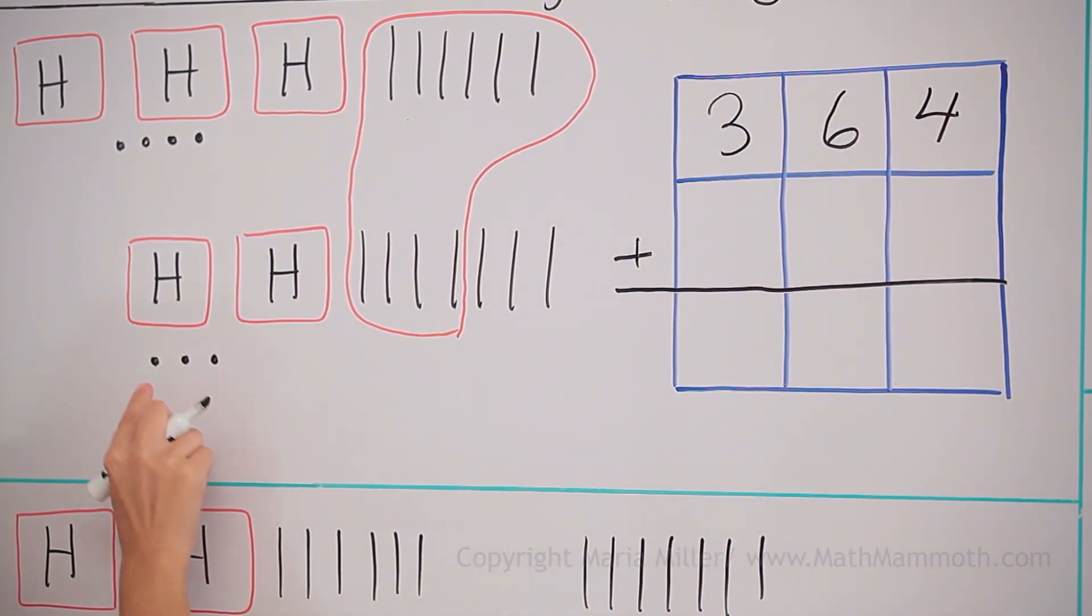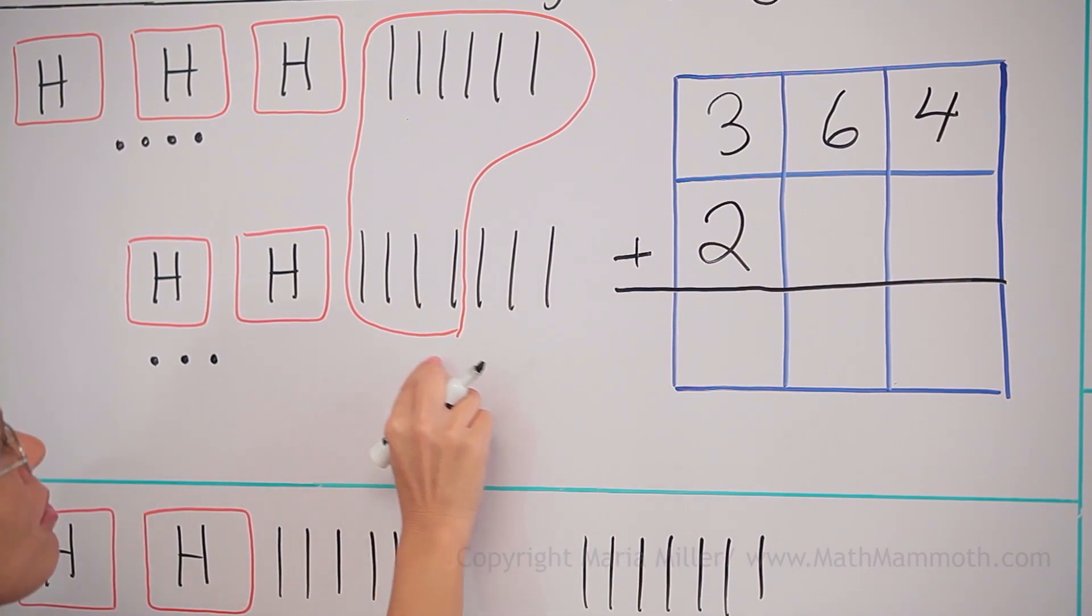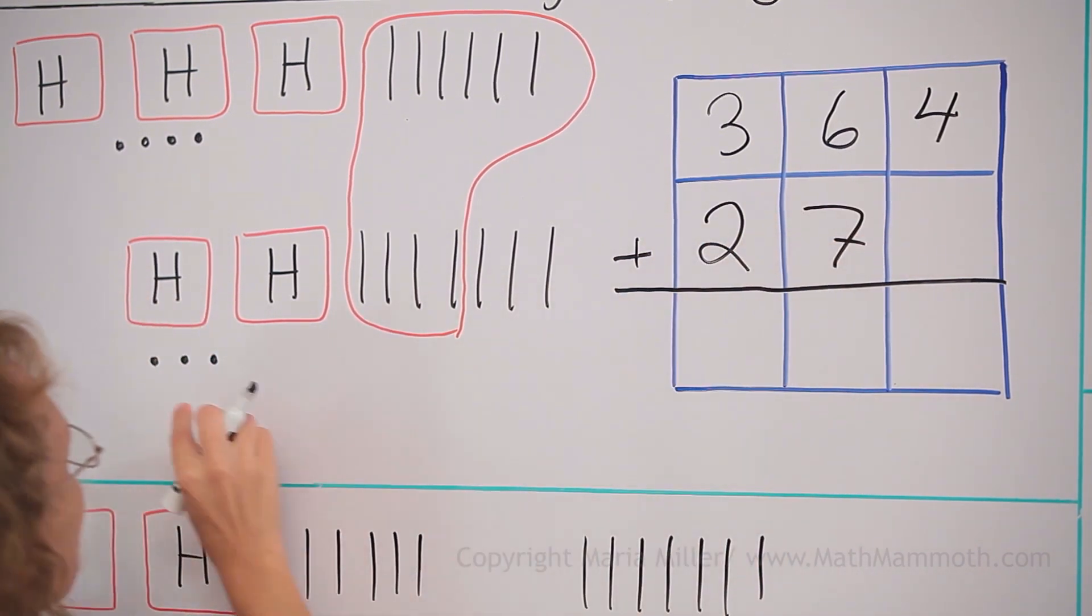And here two hundred, one, two, three, four, there was seven tens, and three.